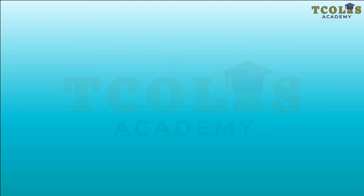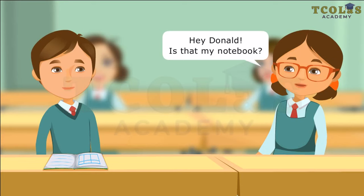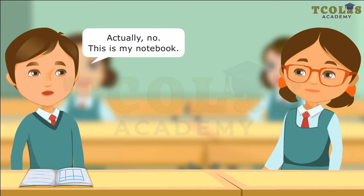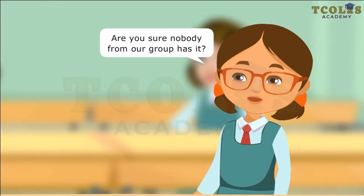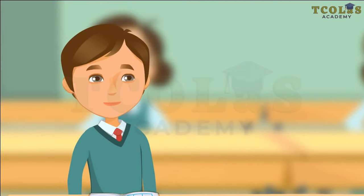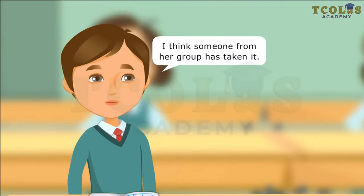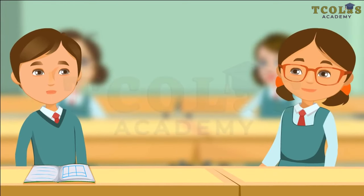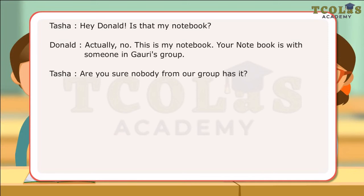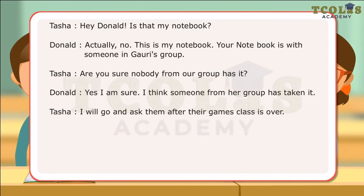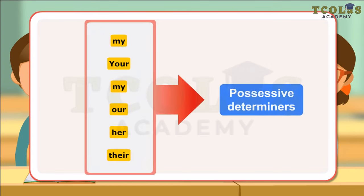Possessive Determiners. Hey Donald, is that my notebook? Actually, no. This is my notebook. Your notebook is with someone in Gauri's group. Are you sure? Nobody from our group has it. Yes, I am sure. I think someone from her group has taken it. I will go and ask them after their games class is over. In the dialogues, Tasha and Donald have used words that give information about the nouns that follow in terms of possession. The words my, your, our, her, their are examples of possessive determiners.